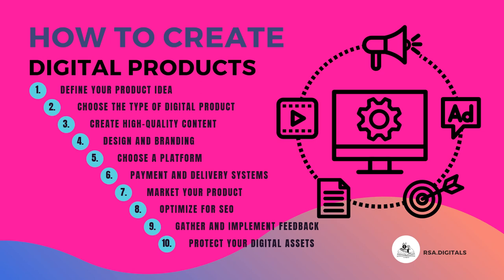Fifth, select a platform that aligns with the type of digital product you're creating — for online courses, platforms like Udemy, Teachable, or Skillshare; for ebooks, Amazon KDP, Apple Books, or Smashwords; for printables, Etsy or Gumroad; for Lightroom presets, Etsy or Creative Market. Sixth, set up secure payment gateways on your chosen platform and ensure smooth and automated delivery processes such as download links or member access. Seventh, develop a marketing strategy — leverage social media, content marketing, and email campaigns.